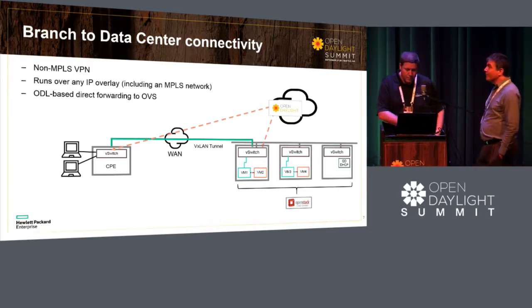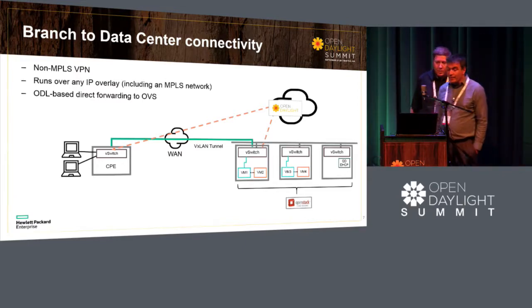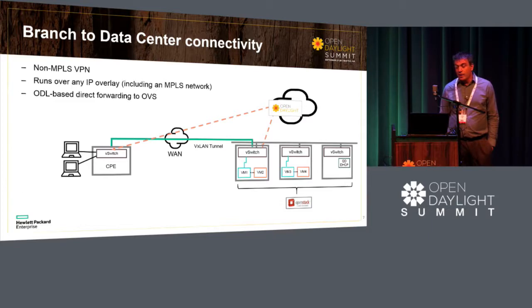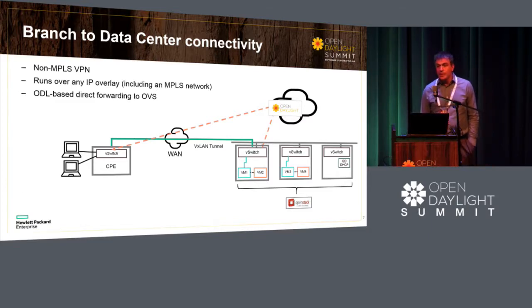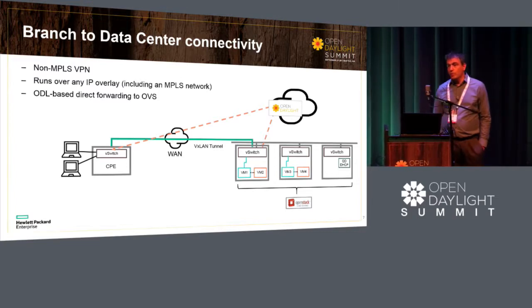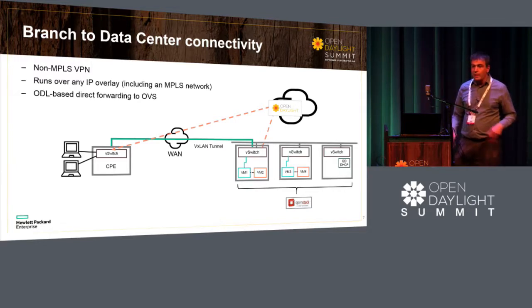The fact that you have any network in between — you have a connection between the CPE box and the virtual switch — you can have any network in between and you don't need the MPLS network anymore. You have a direct connection between them running as an overlay. You have statistics from OVS for every tunnel, so you know exactly how much you send on each tunnel and how much was received on the other end. You can extract that information and get better SLA visibility on that network. We are monitoring those tunnels with BFD.